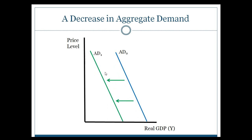Similarly, if you're looking at a decrease — which can also occur — you're looking at the opposite movement. Usually one of those factors that leads to GDP has declined, whether it be consumption, investment, exports, or one of those things. If the decline is substantial enough and isn't counteracted by any growth, you may actually see the aggregate demand curve pushing in the leftward direction.